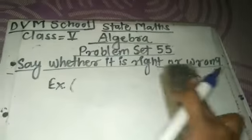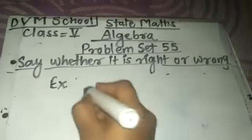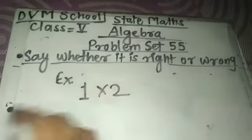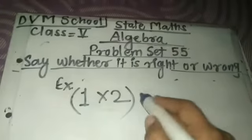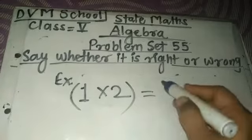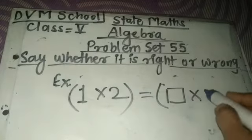For example, 1×2 is given and it is equal to something multiplied by 1.